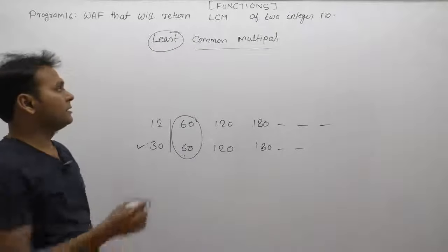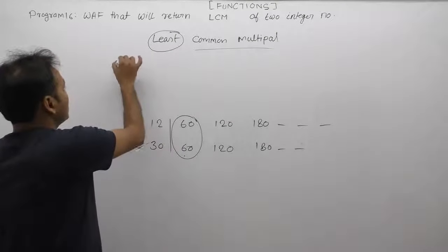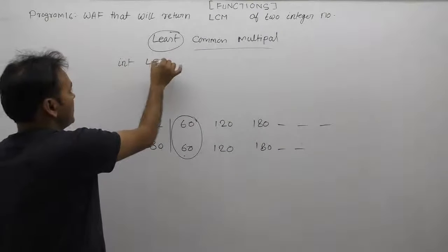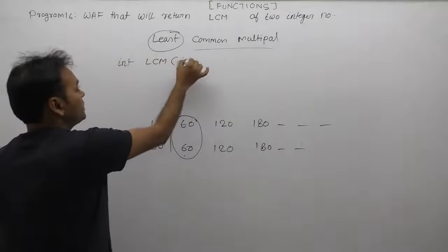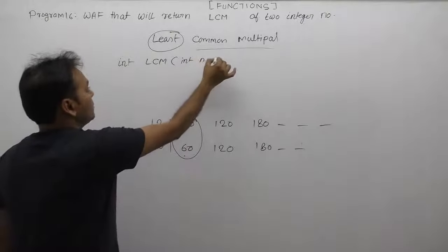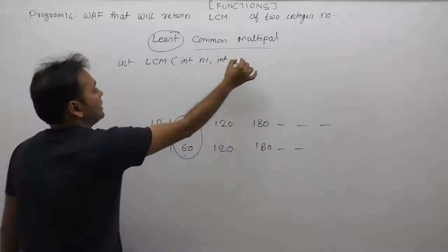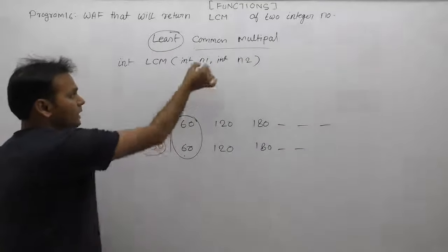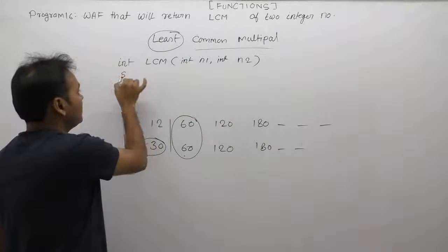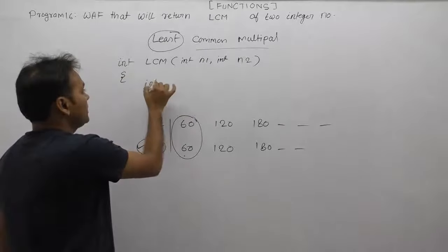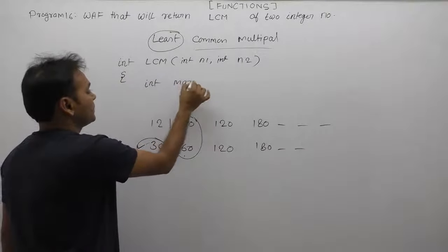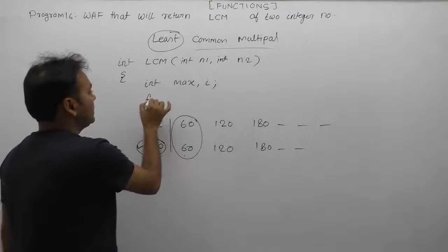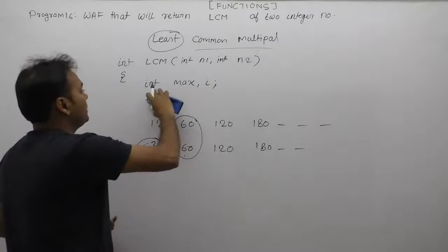We have two integers n1 and n2. First, we need to find the largest among n1 and n2, so we take a variable called max. We also need a variable i for iterating the loop. First, we calculate the maximum between the two numbers.